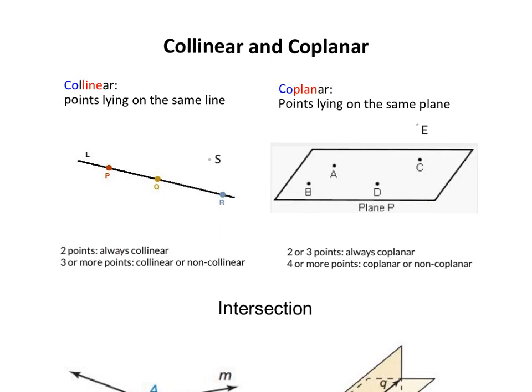Similarly with coplanar, two or three points, we can always find a plane going through two or three points, so they are always coplanar. But when we have four or more points, they may be coplanar, they may be non-coplanar, just like the picture here.